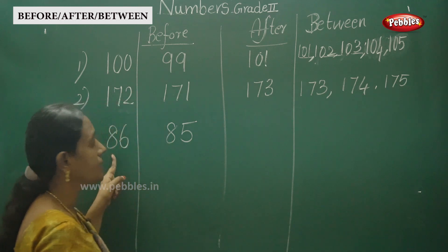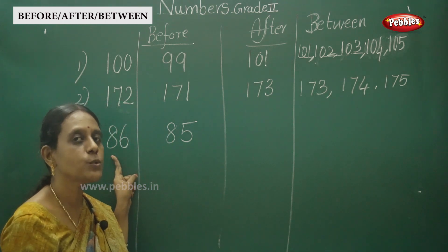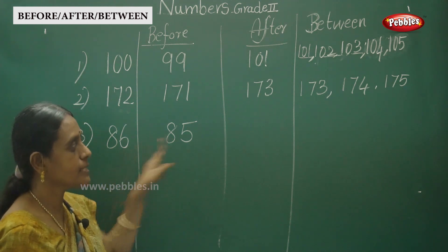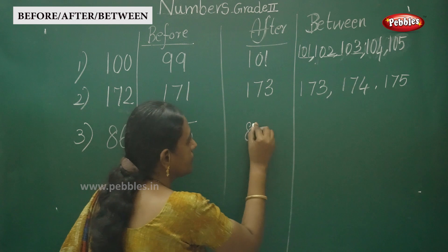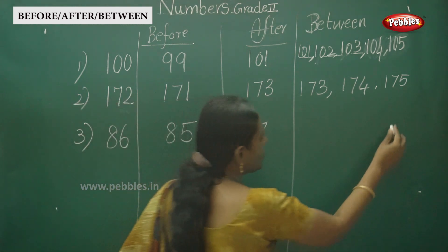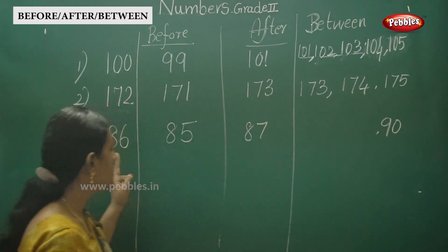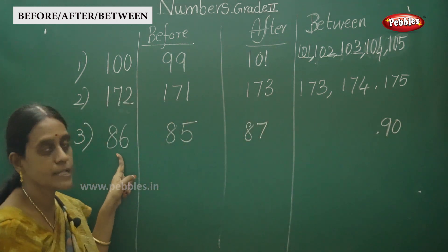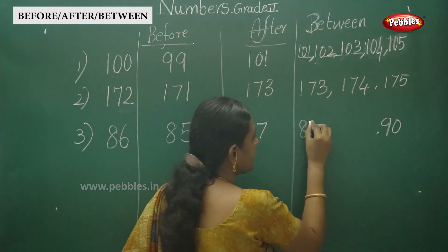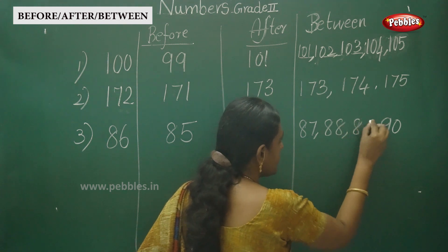The next number: 86. Counting: 81, 82, 83, 84, 85, 86, 87. So before 86 is 85 and after 86 is 87. And for between numbers, the question goes up to 90. Between 86 and 90: 87, 88, and 89.